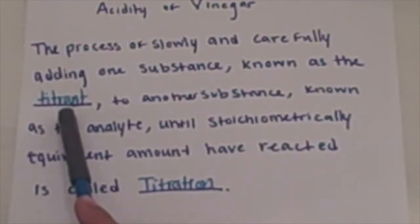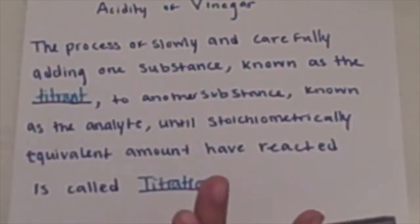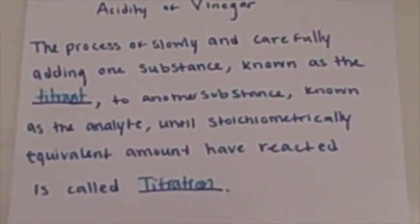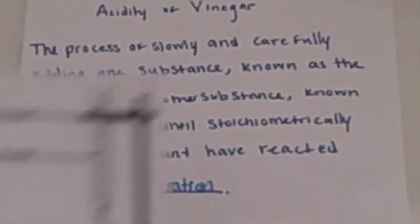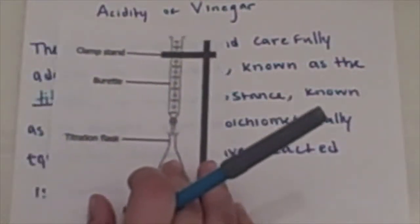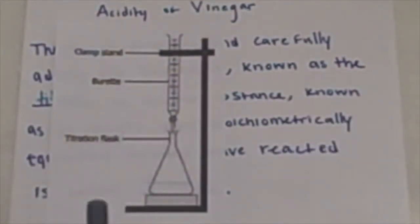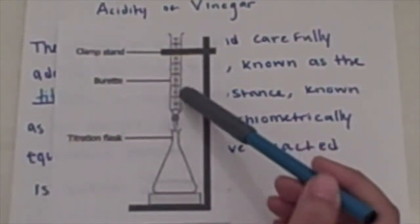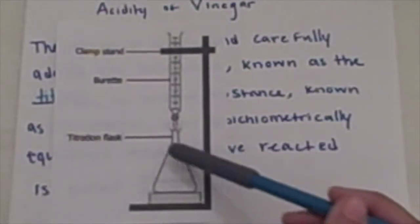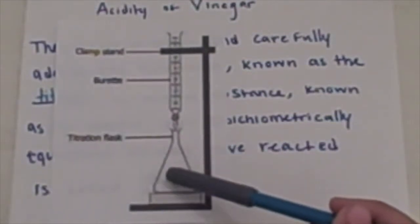The substance referred to as titrant is normally dispensed dropwise from a piece of glassware known as the burette. Here's just an illustration of what a burette looks like. We have here where the titrant will be inside and then this is where your analyte will be.